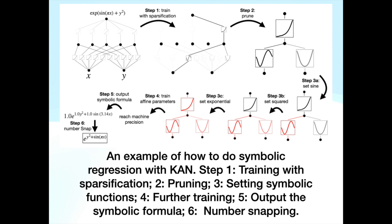An example of how to do symbolic regression with KANs: Step 1, training with sparsification. Step 2, pruning. Step 3, setting symbolic functions. Step 4, further training. Step 5, output the symbolic formula. Step 6, number snapping.